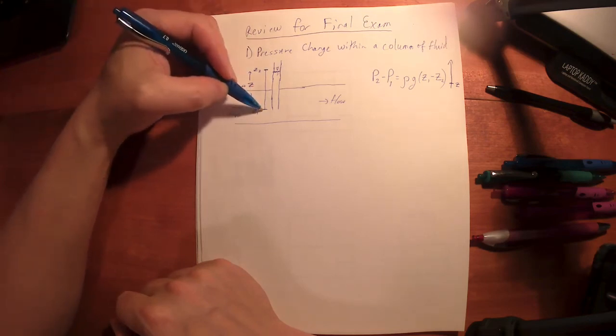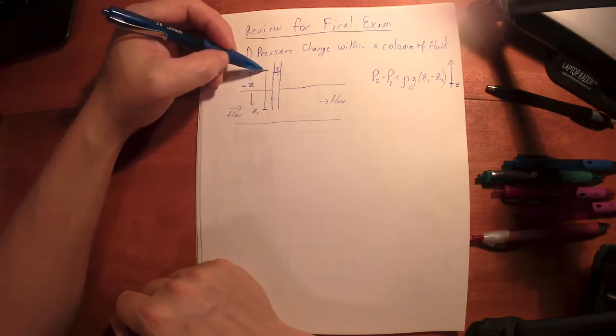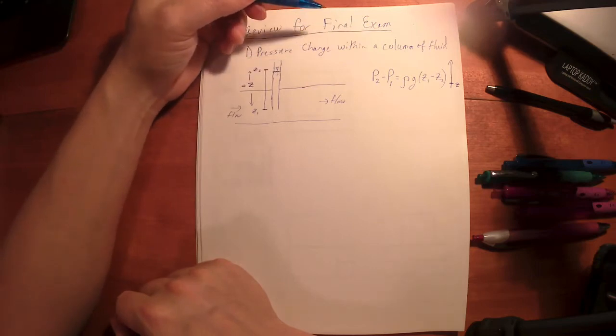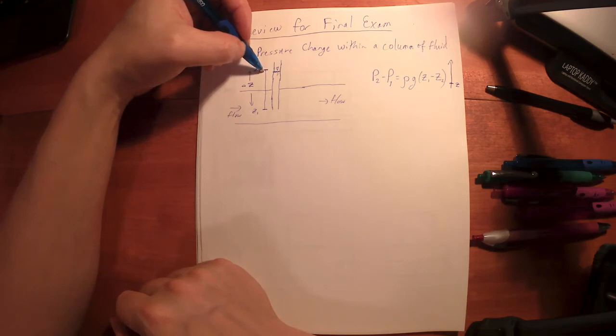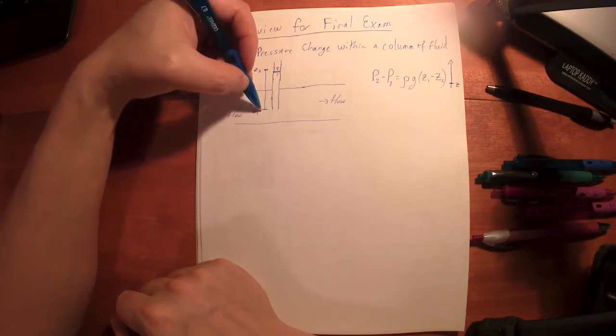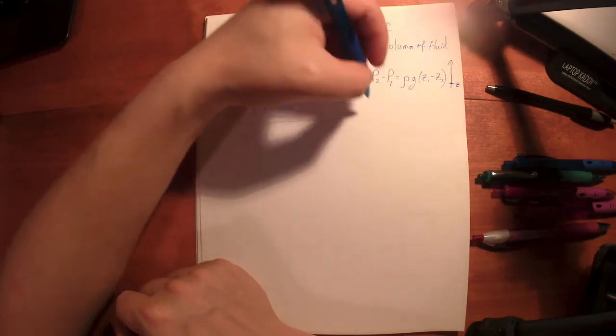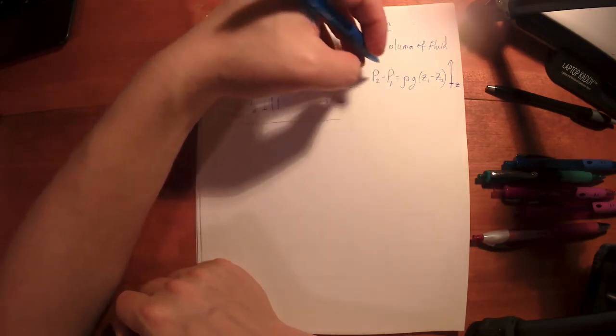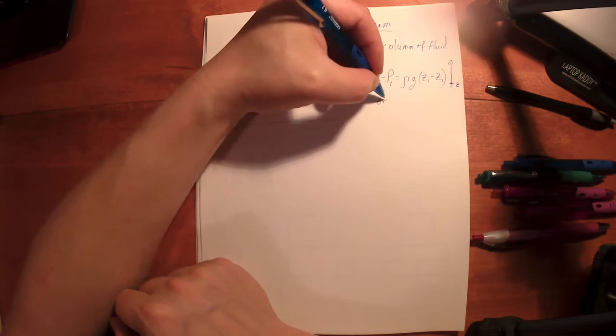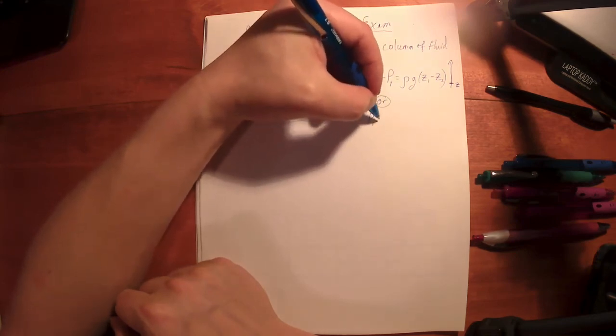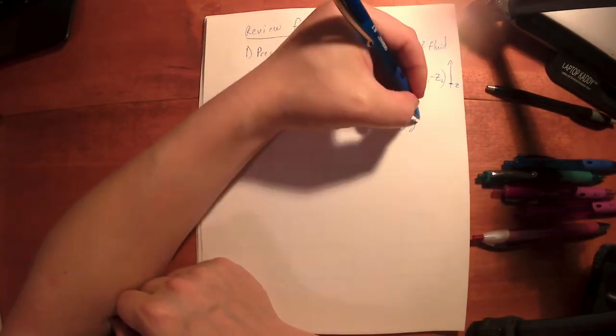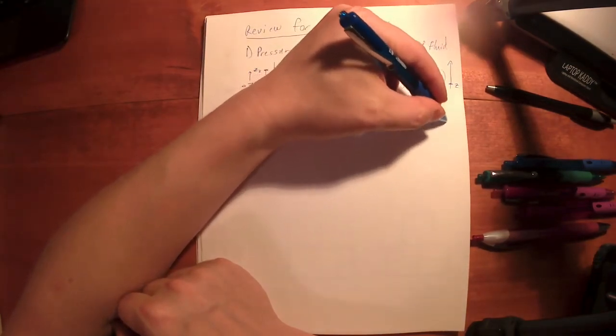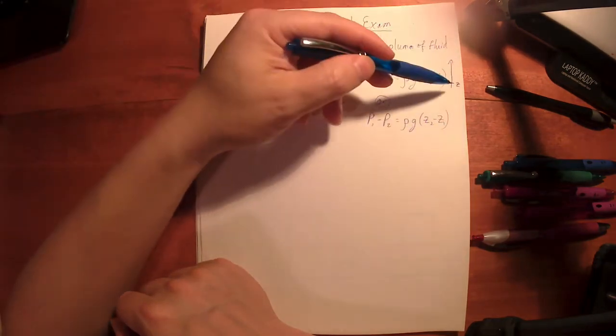So let's say I call Z1, 0, and Z2, H. I've got my whole equation flipped here, right? I could write it either way. I could say P1 minus P2 is equal to rho G, Z2 minus Z1, and that works. That's saying Z refers to elevation.